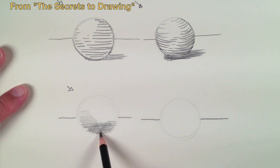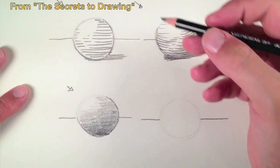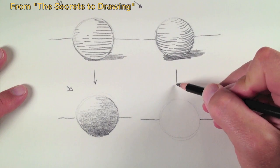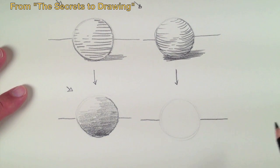In the first sphere, I'm just doing straight horizontal lines to add the shadow. It does an adequate job of creating the illusion of shadow and a light source, but it does little to indicate the illusion of form.